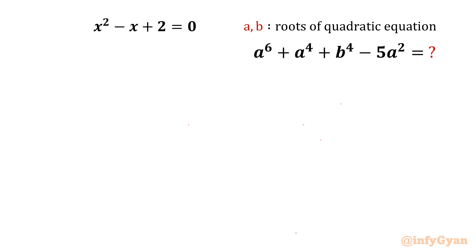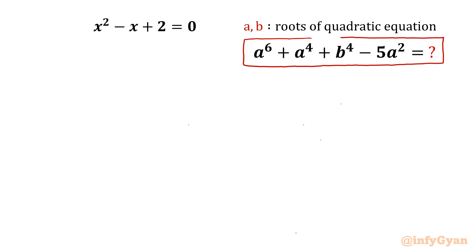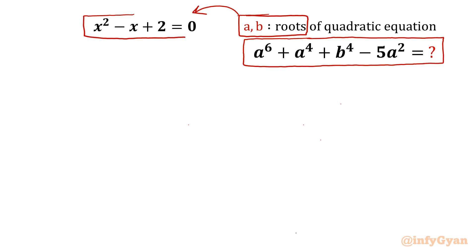We have to simplify the expression a⁶ plus a⁴ plus b⁴ minus 5a². I will begin by writing two equations, since a and b are the roots of this quadratic equation, both a and b will satisfy it. So I will put x equal to a and x equal to b into the quadratic equation.